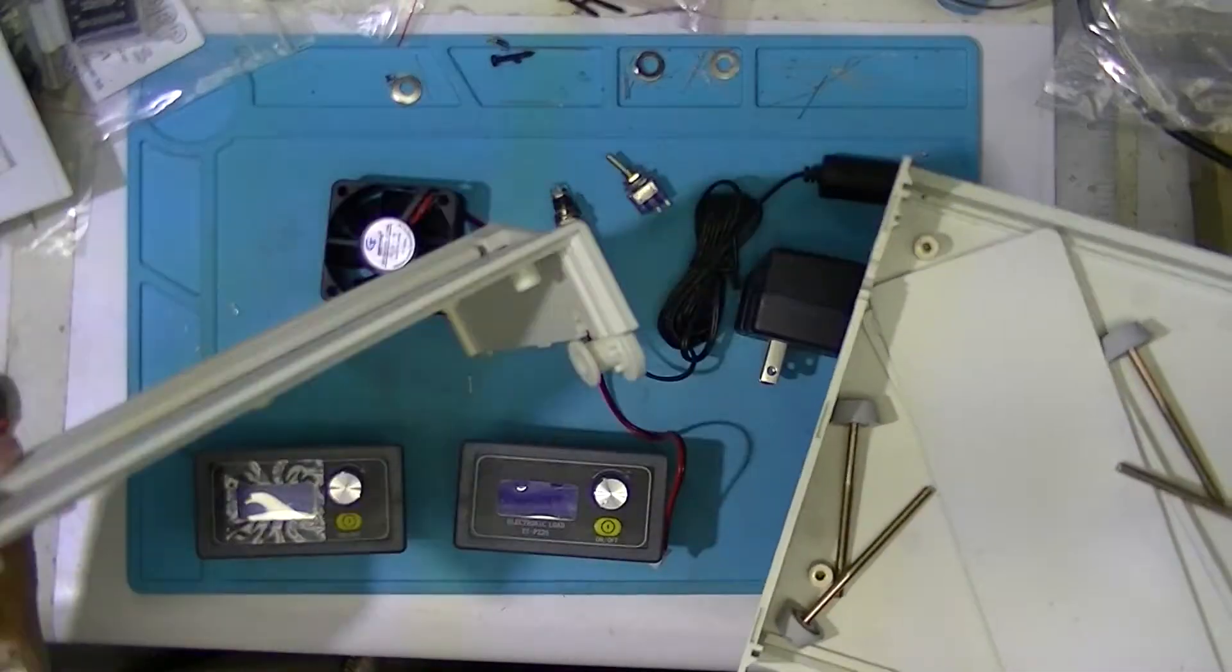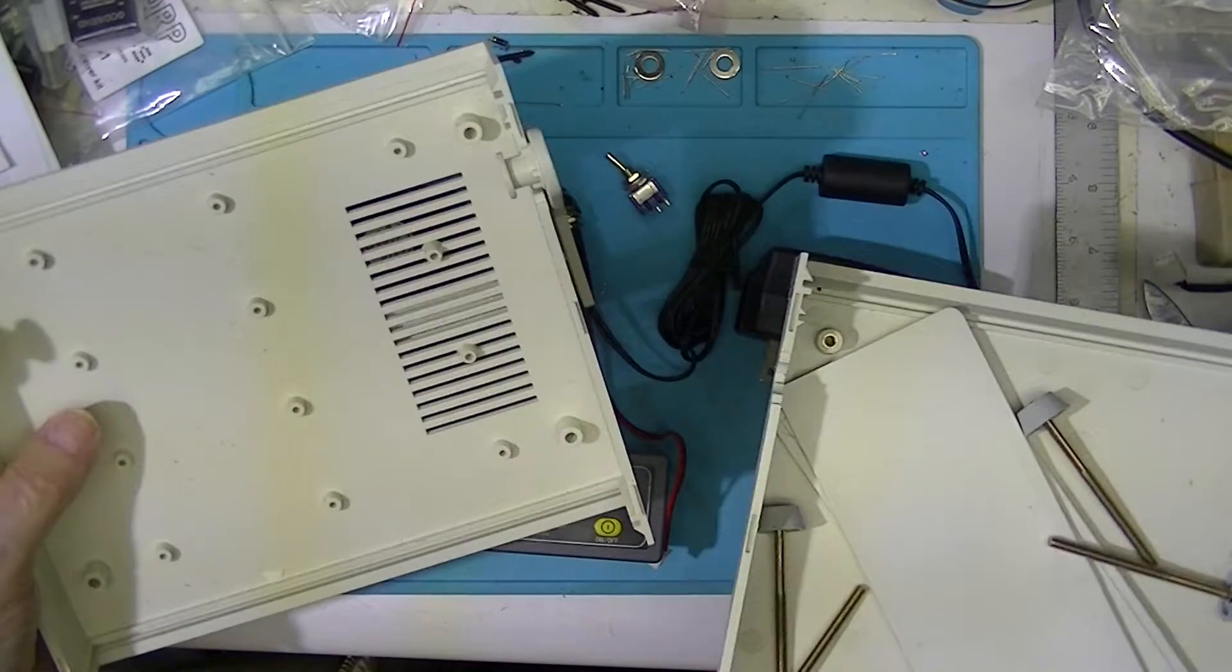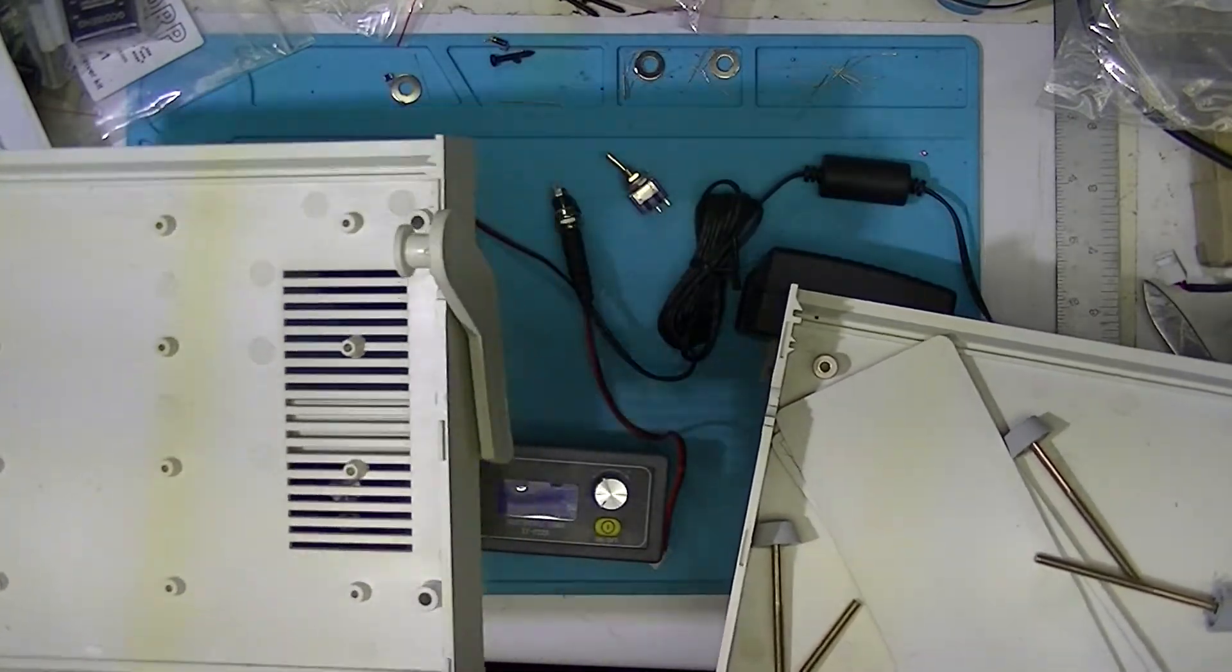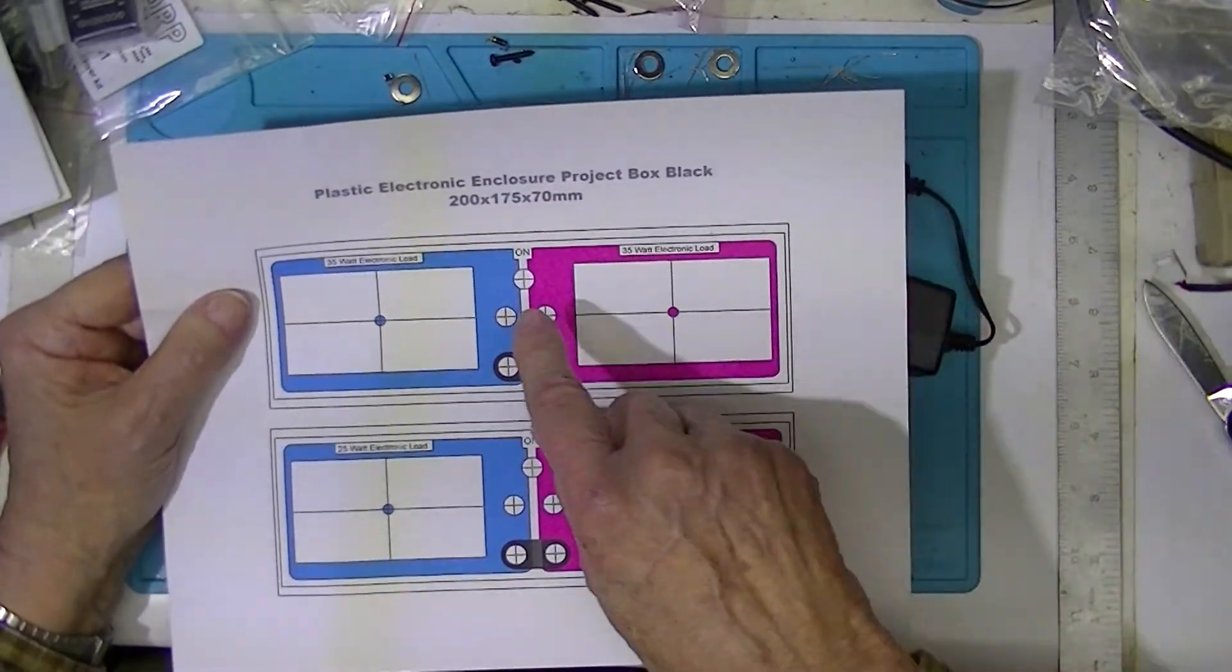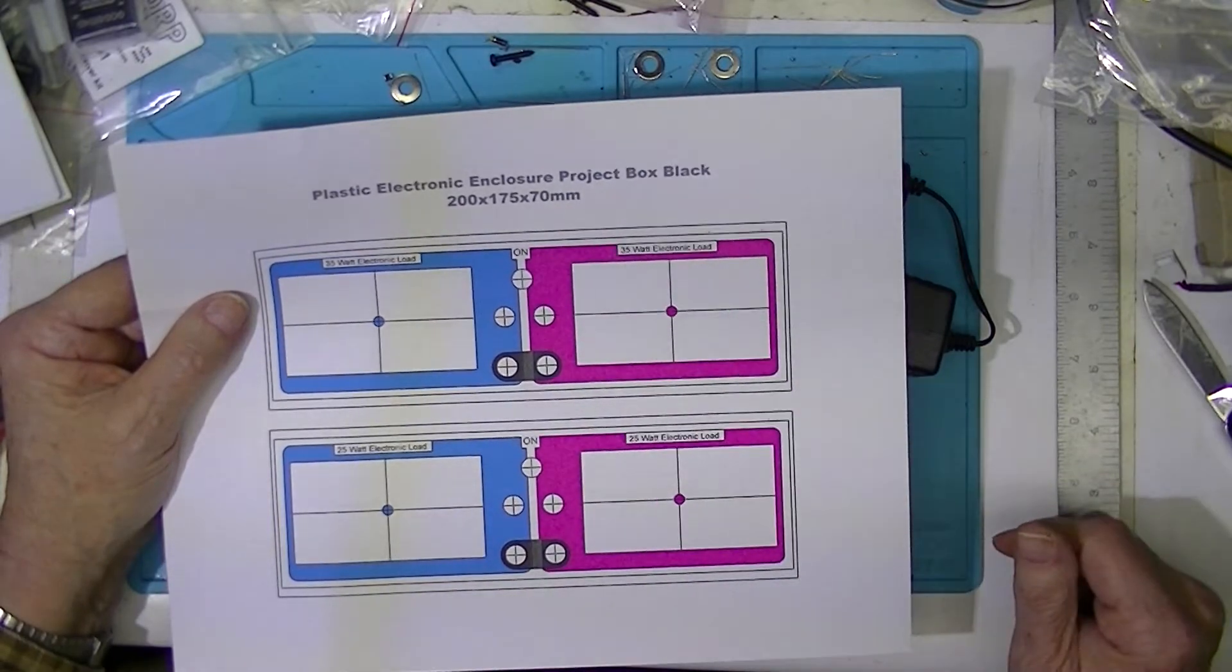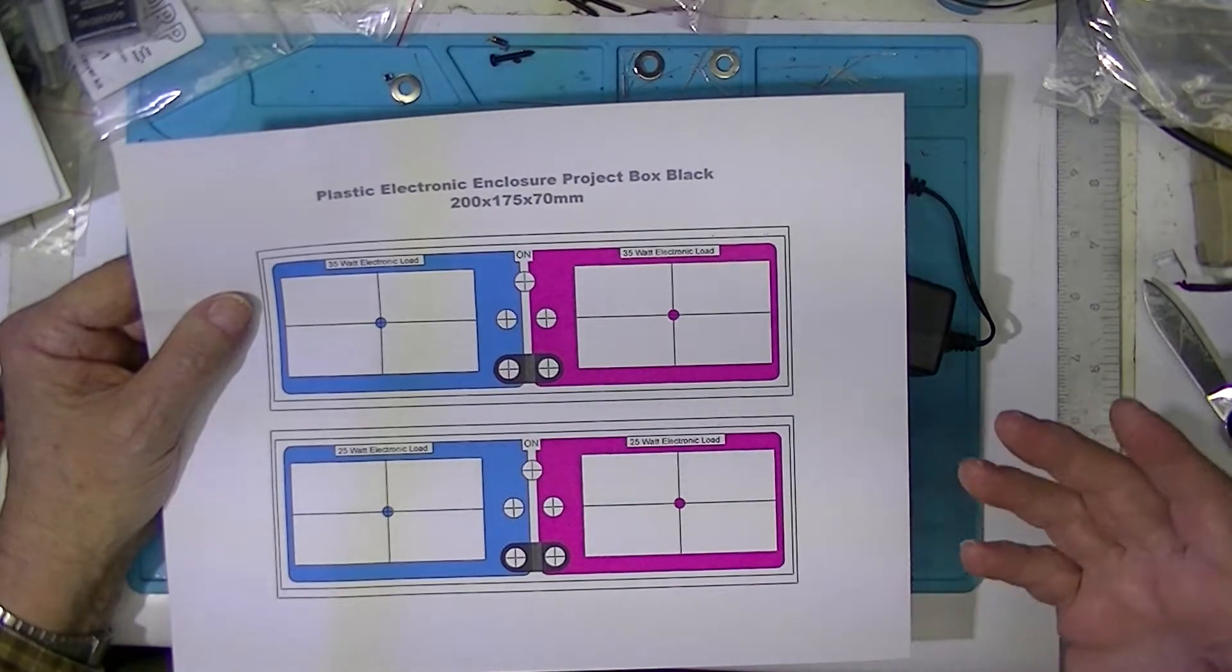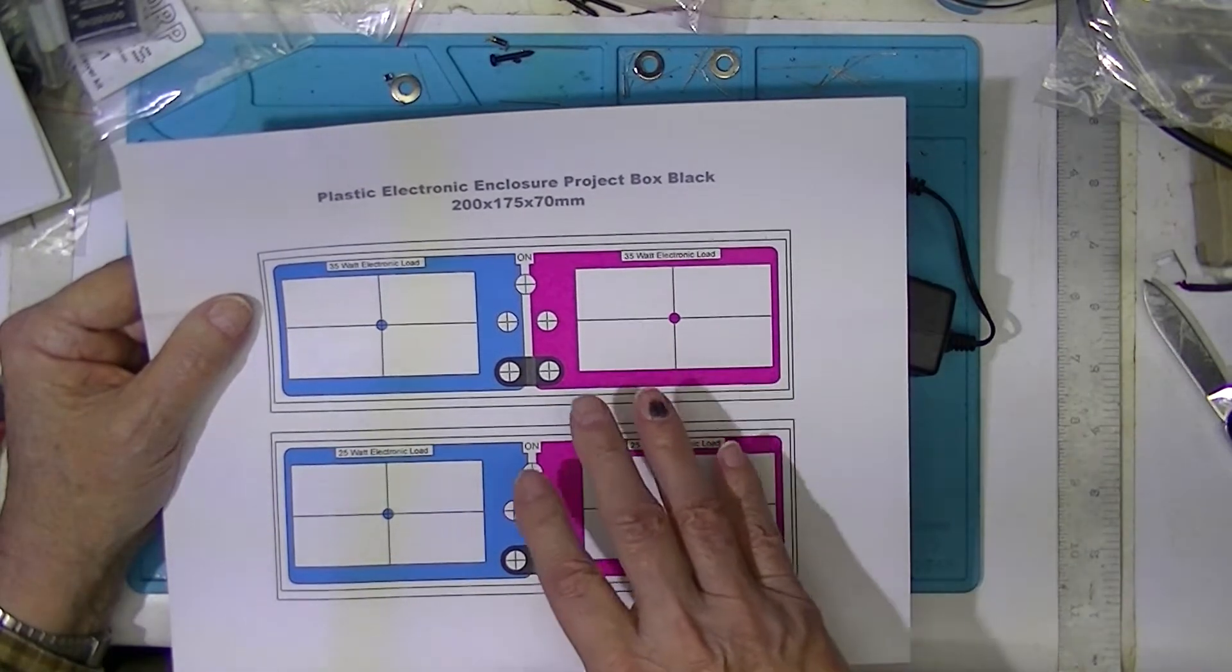I intend to enclose them in this enclosure. It's the one with the bail, it has a ventilation slot on what I believe is intended to be the bottom. The case is referred to as a 200 by 175 by 70 millimeter enclosure project box on Banggood, eBay, and maybe AliExpress.